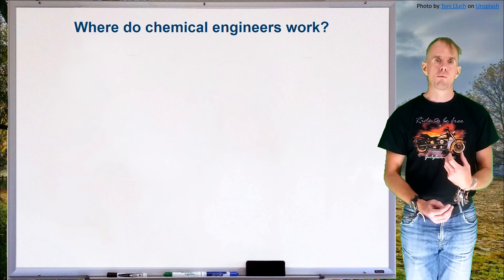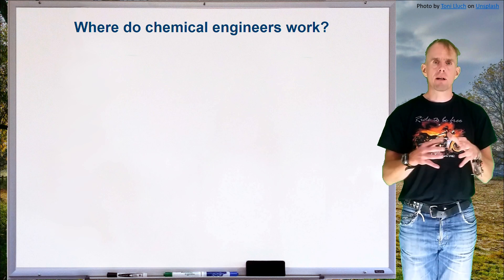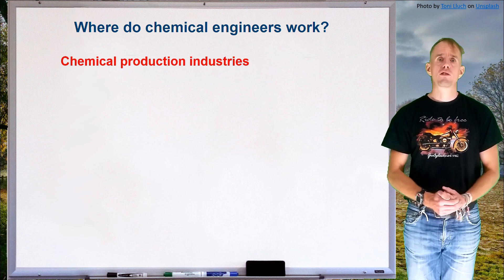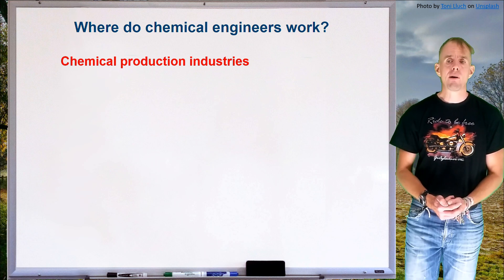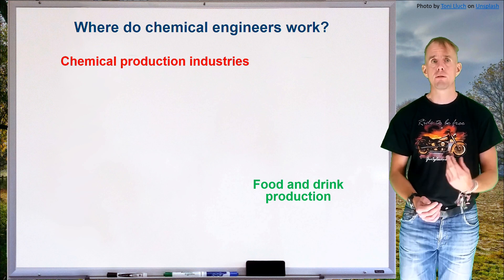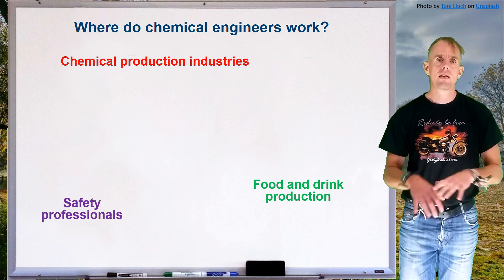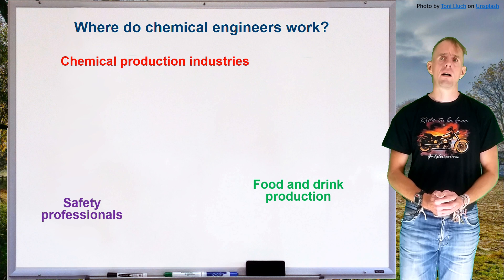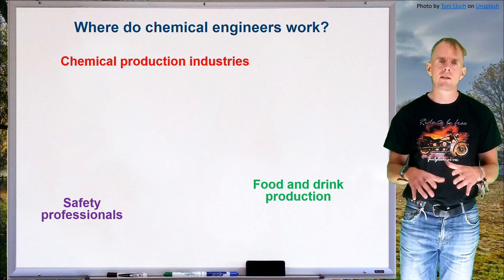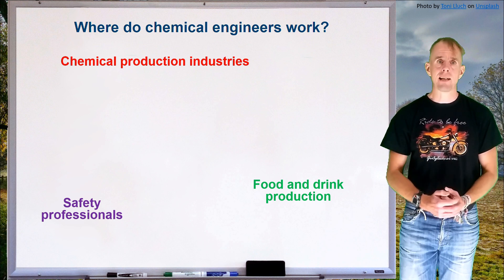Chemical engineers work in a variety of different industries. Although much of this course covers the traditional chemicals industry, that is far from the only place chemical engineers work. Chemical production industries make up a part of modern chemical engineering, but food and drink production is massive — you'll find as many chemical engineers in food and drink production as in refining. Chemical engineers also work as safety professionals, since the large sites by their very nature involve high pressures, high temperatures, and chemically hazardous materials, making safe operation a very important part of the discipline.